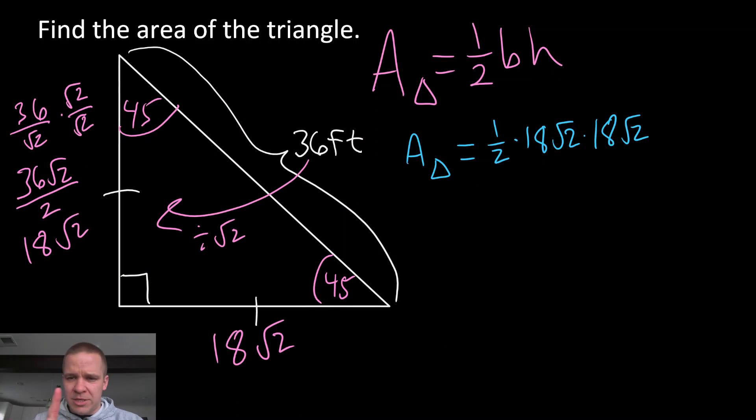So let's pump the brakes here for just a sec. I could do one half, 18 times 18, that's 324 if I'm not mistaken, and then root two times root two, that's just gonna be two. If I've got that all separate, boom, those cancel out, and I'm just left with 324 feet squared.